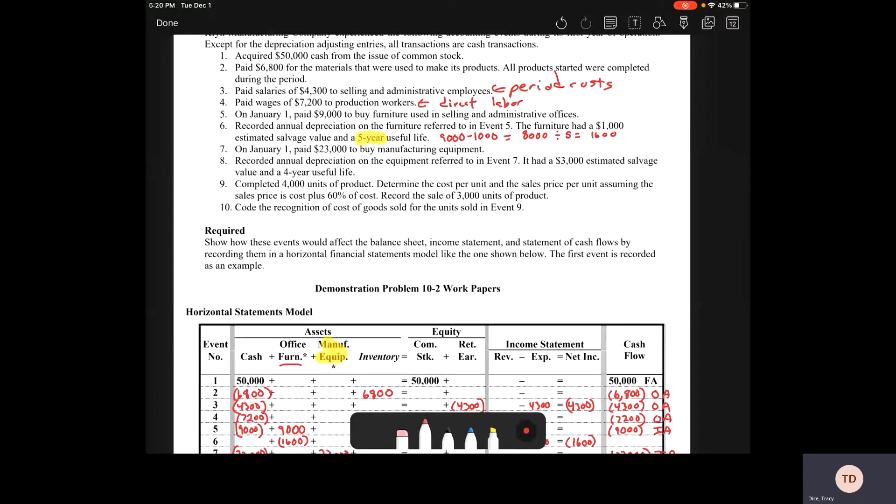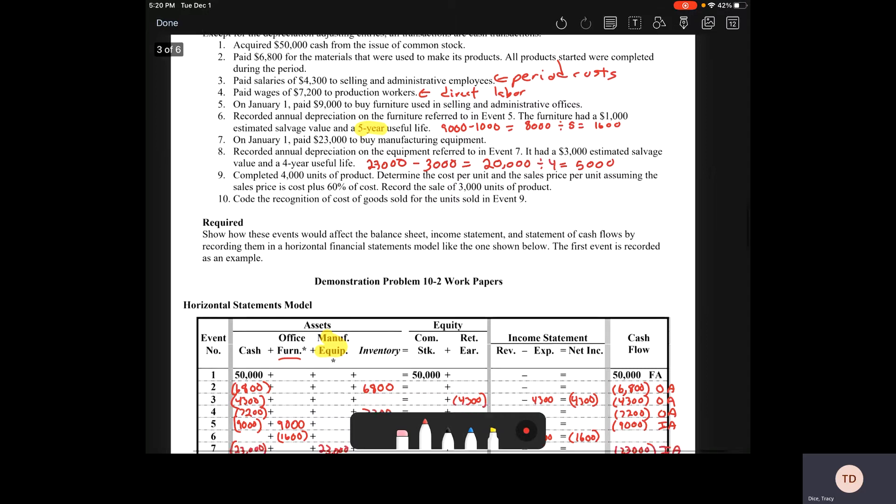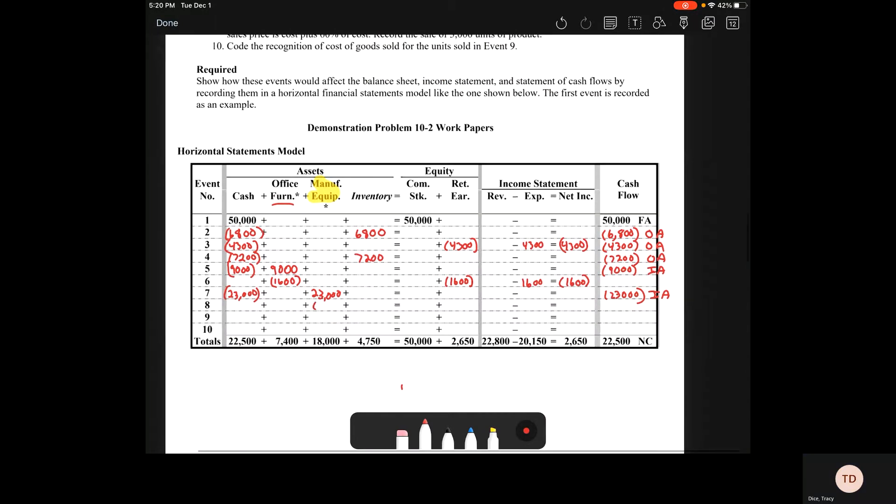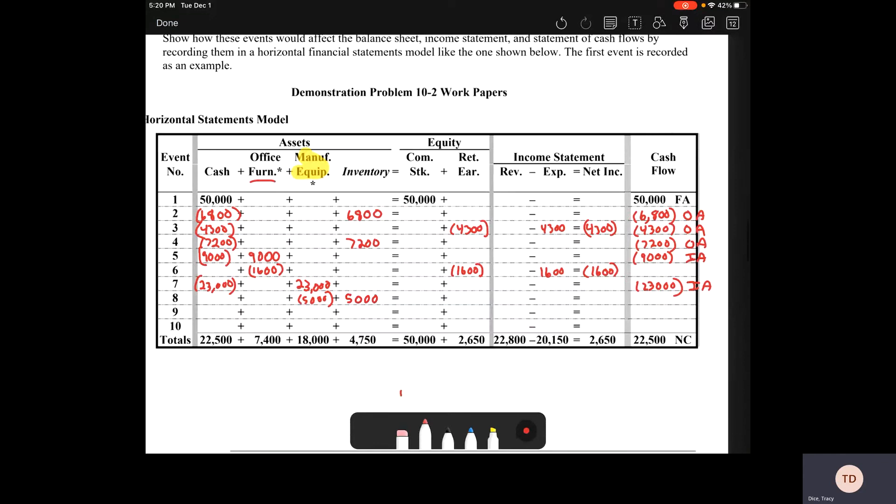Number eight. Now we've got to depreciate the equipment. It has a $3,000 estimated salvage value. So we're going to take that $23,000 and subtract the salvage value, which gives us $20,000. It's got a four-year useful life, so we depreciate it over four years and come up with $5,000 per year. Now, this equipment is directly used for our production, so it's a product cost. When it depreciates, we take it out of the manufacturing equipment and simply move it over to our inventory because we are going to count that depreciation as part of our cost of goods sold when we sell this merchandise.